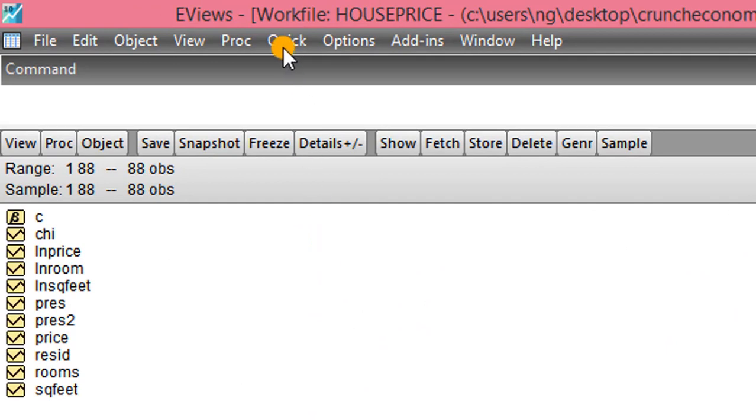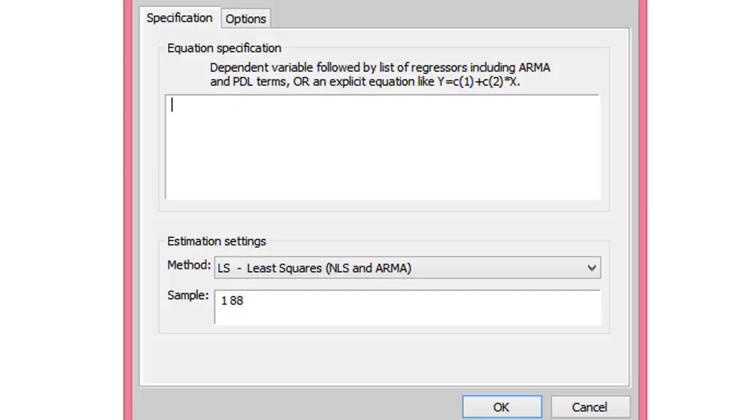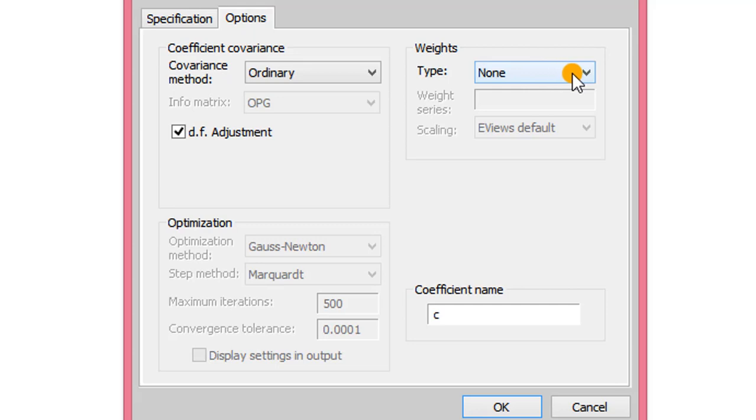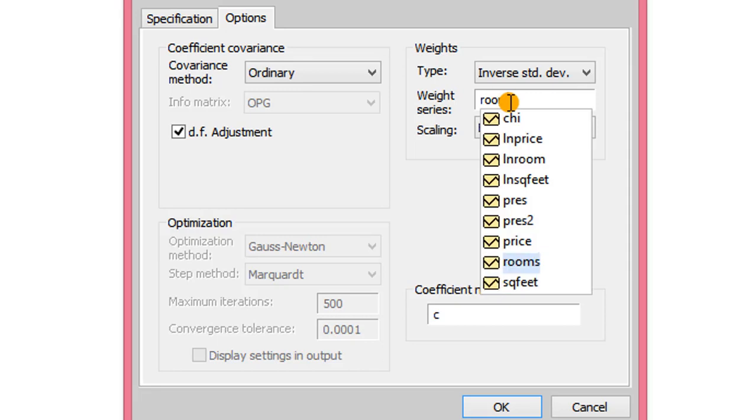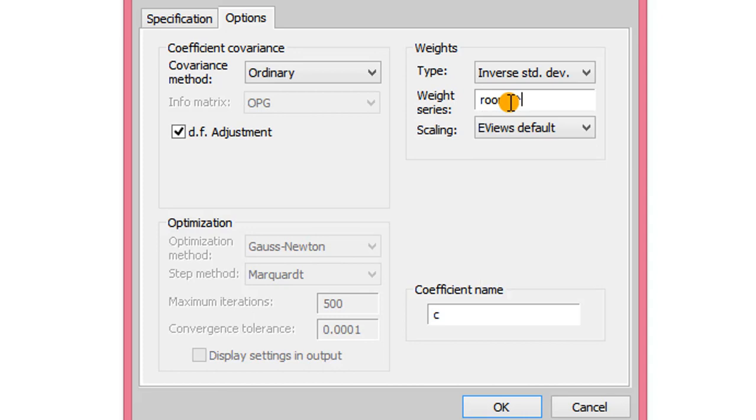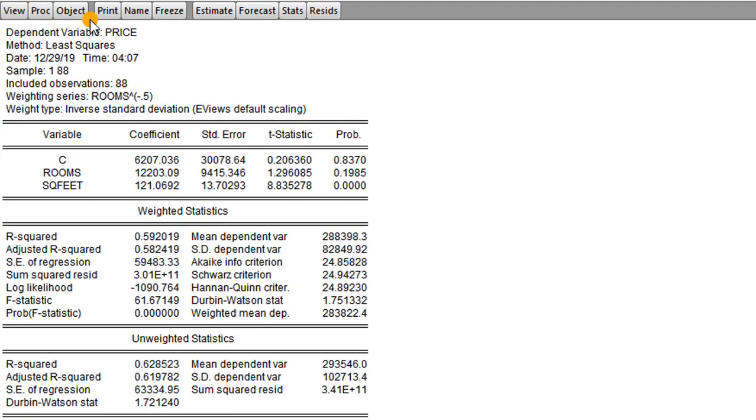So we are now back to EViews. We go to quick, estimate equation. We list the variables with the dependent variable first, followed by the constants and the independent variables. Next, we click on options. Under weights, we change type to inverse standard deviation. The moment you do that, the weight series column opens up and we type in the weighted variable or the variable being used as the weight. In this case, we are using rooms. So rooms raised to the power of open bracket minus 0.5. Then we click OK and we have the results. So we can see here the dependent variable is price and the weighting series or the weighting series now is rooms inverse standard deviation.